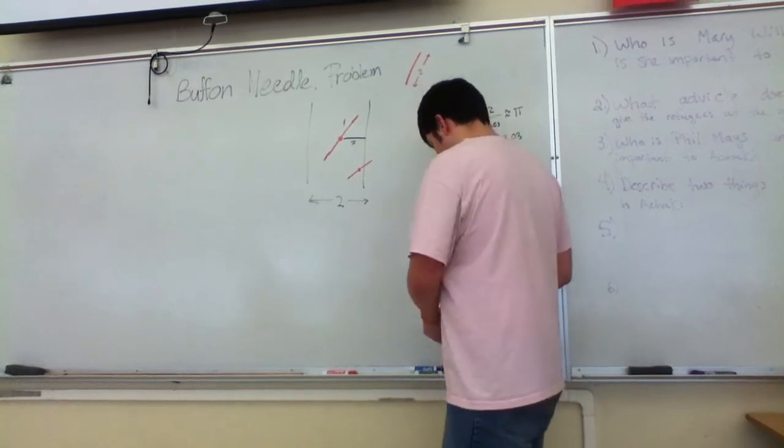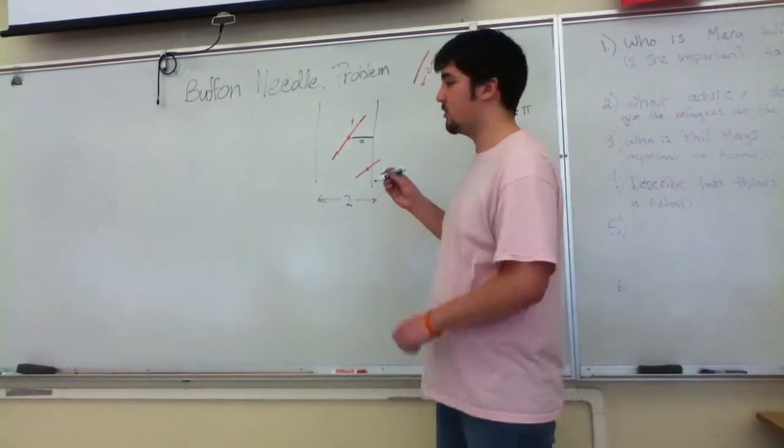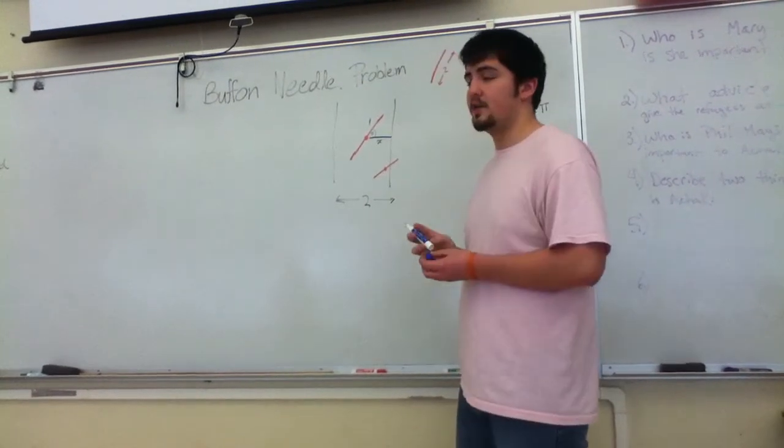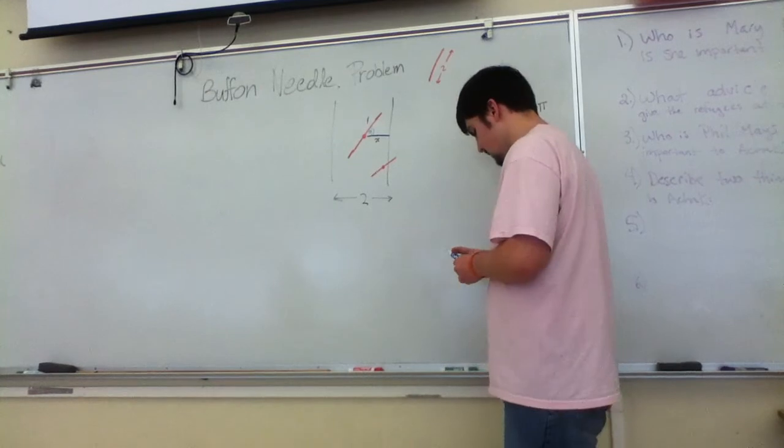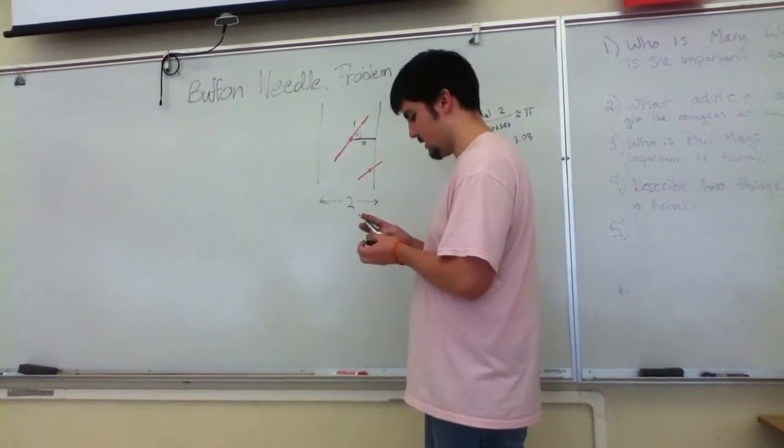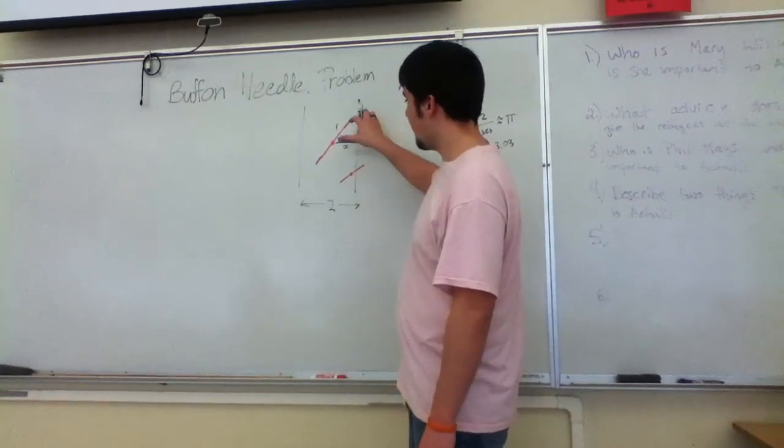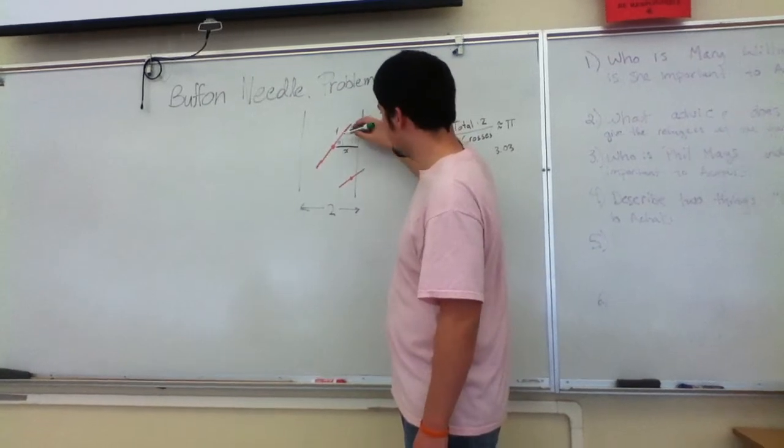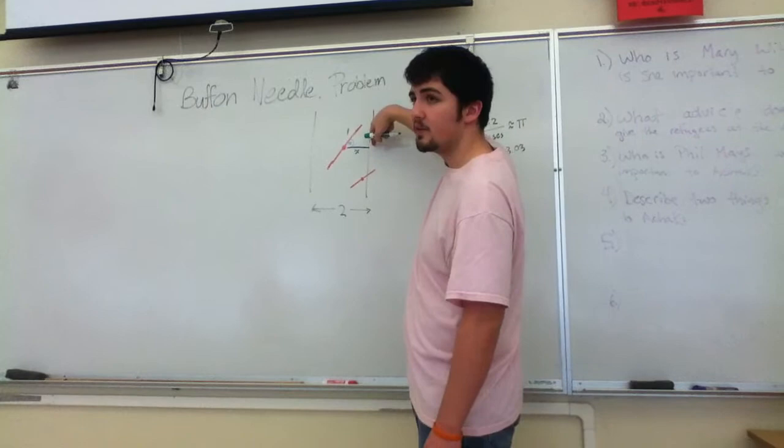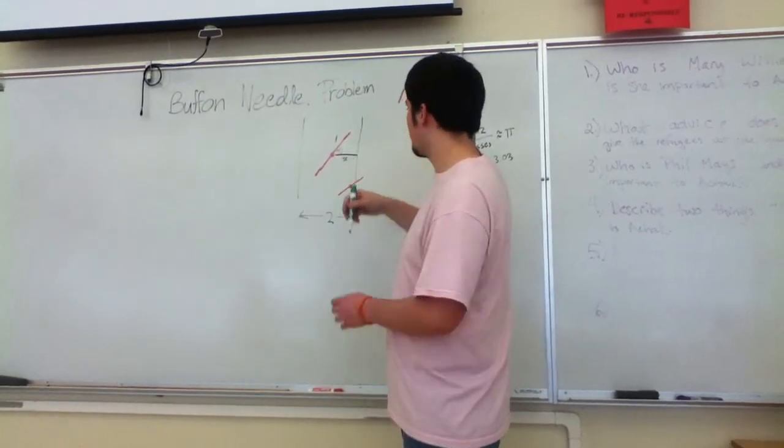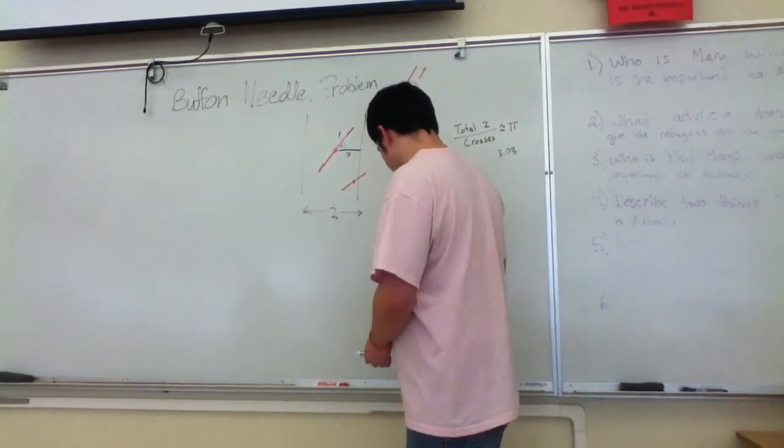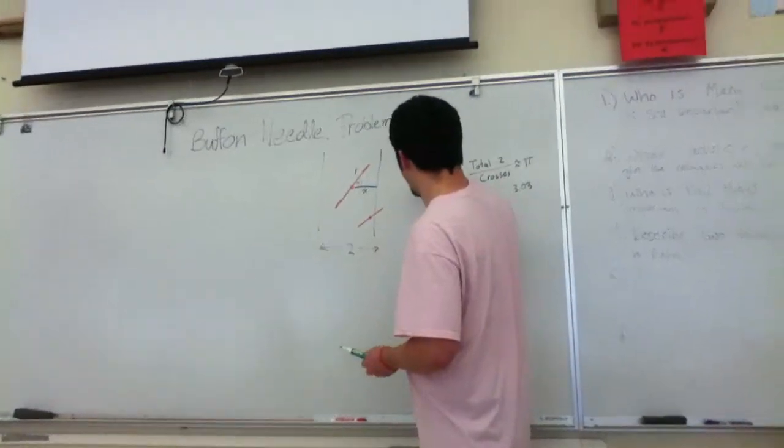We will also mark the angle between this line and the stick. We'll call it theta. Now we can record every possible combination of how this stick will land, by some combination of how far it sticks out compared to how far away from the line. We can make a triangle out of this.